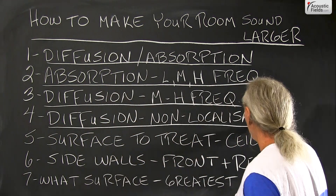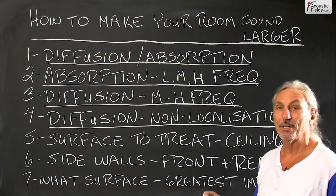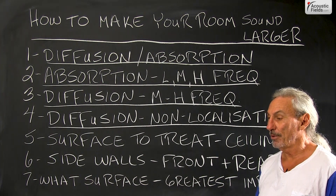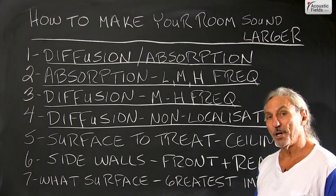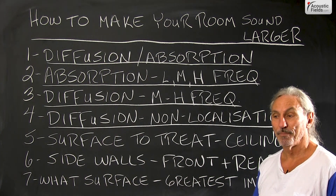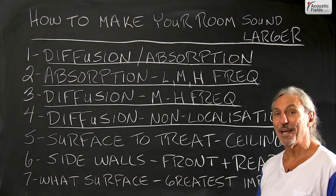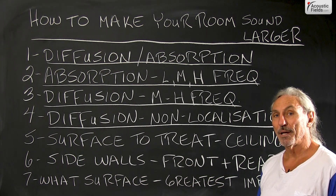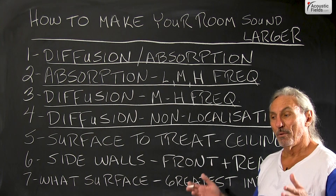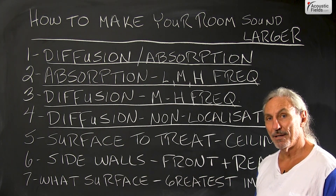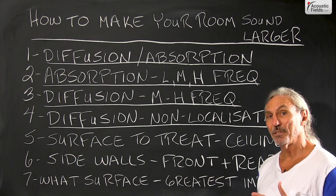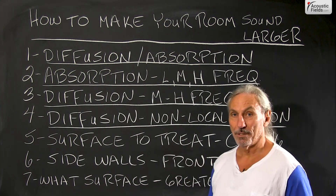What does diffusion do that's so magical? It tricks our brain into not localizing the reflection. In my studio in North Hollywood, California, we blindfold people, put them in the chair, and ask them to estimate the distance from the ceiling to the floor. The distance from ceiling to floor is about eight and a half, nine feet in our studio — I never get a guess under 12, 13, 14 feet. Why is that? It's because of diffusion.